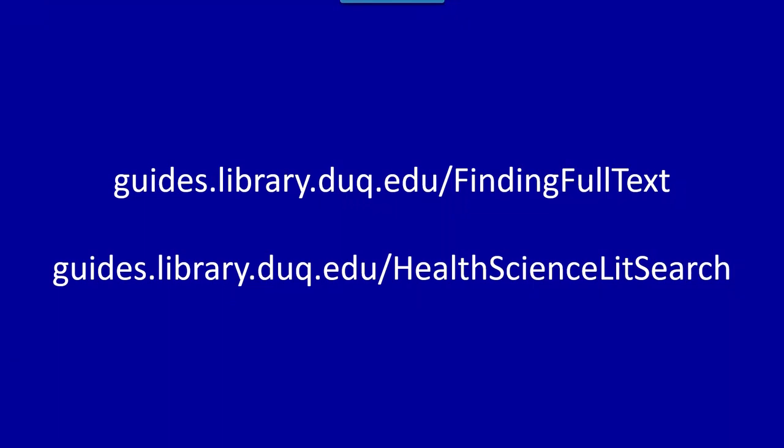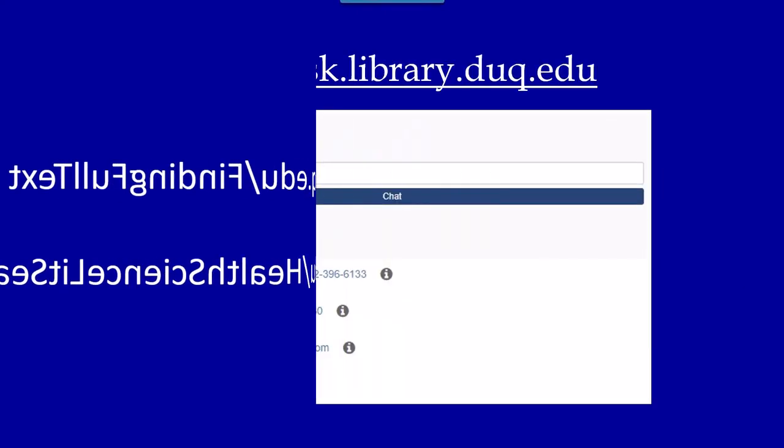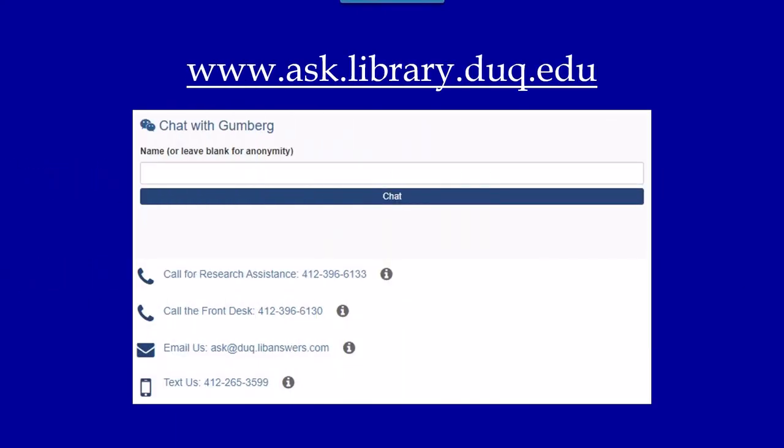You can learn more about this option in our Finding Full Text Library Guide. To see more tips on conducting a search in the health sciences, check out our Health Sciences Literature Searching Guide. This has been a tutorial on conducting a basic search using CINAHL. If you have any additional questions, you can visit Ask Gumberg at the site below and contact the library.